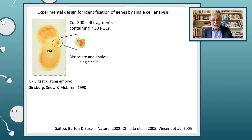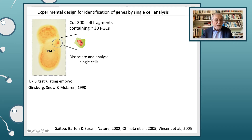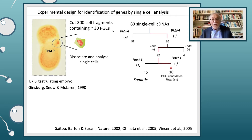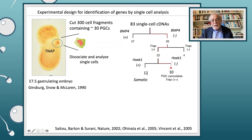So, just to go through some of the key aspects: we knew that there was a putative cluster of germ cells at gastrulation, at day 7.5 of development. The experimental design was to cut out a fragment of about 300 cells, assuming there would be about 30 primordial germ cells in this cluster, and we wanted to find genes involved in this. This was all done by single cell analysis. We eventually had 83 single cell cDNAs, and we did a differential screen separating somatic cells from germ cells. We came to the conclusion that we had cDNAs from 12 somatic cells and 10 primordial germ cells.